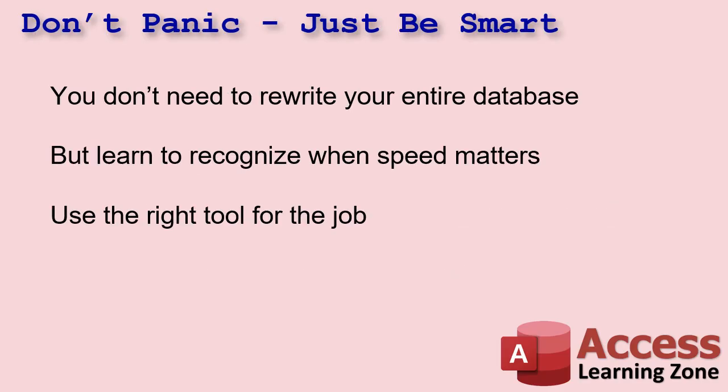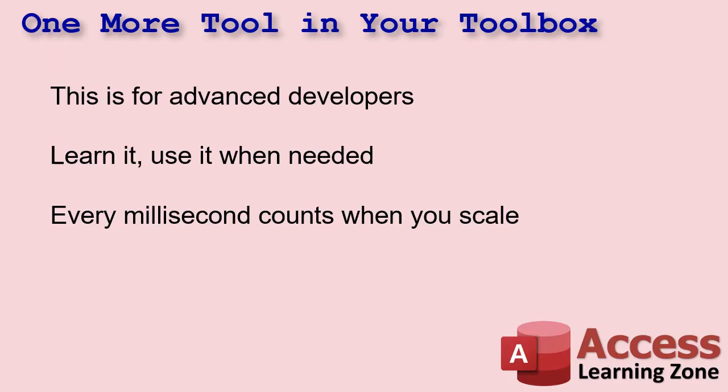You don't have to rebuild your entire database and purge all the lookups. But when you're optimizing performance-critical parts of your application, this is a technique worth knowing. It's another tool for your toolbox. This is for advanced developers — use it when you need it, you don't have to put it everywhere. Now that I've put this in my database, every time I go to use a DLOOKUP I just use my faster function instead. Every millisecond counts when you scale — if you start adding users, adding lots of records, things start to slow down.